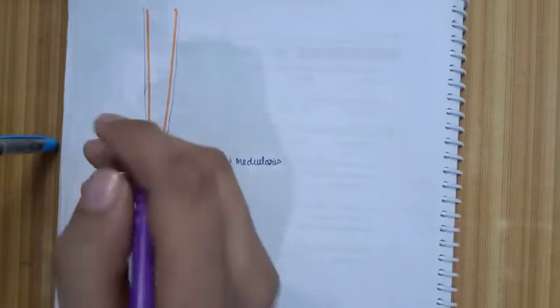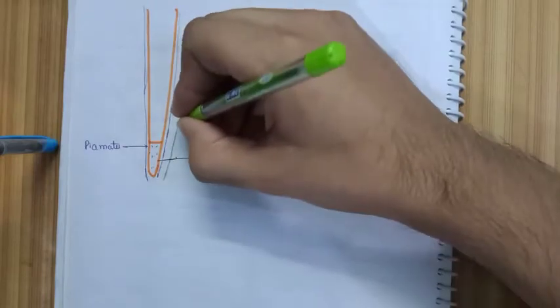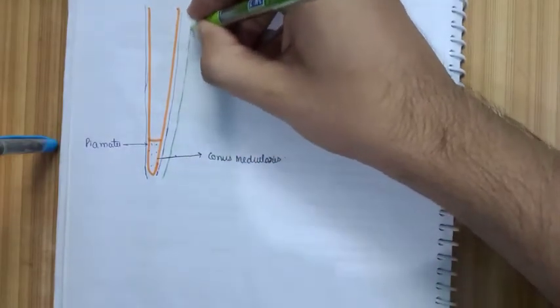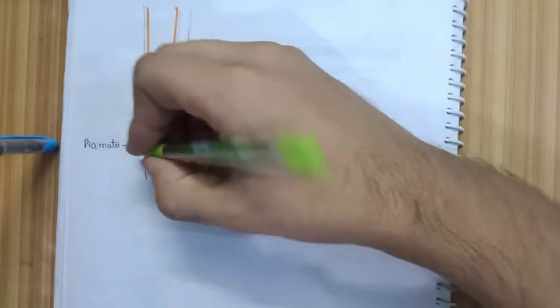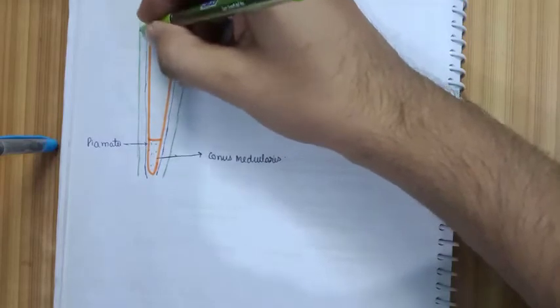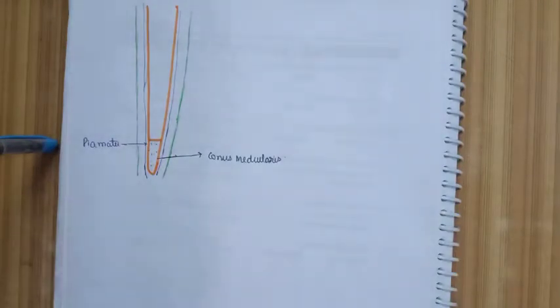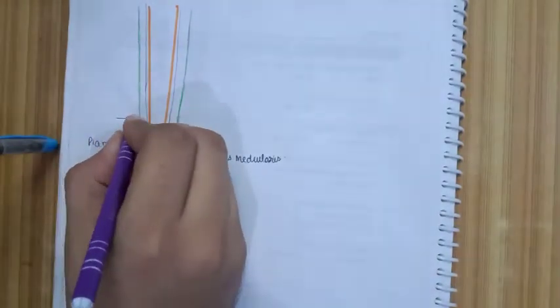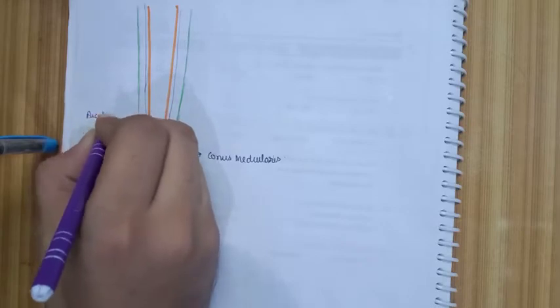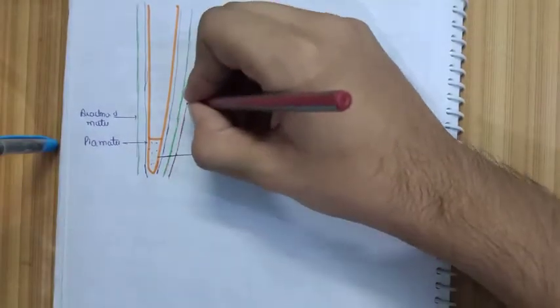The next covering is the arachnoid mater. These coverings are not widely apart — they are closely attached to each other, though the diagram separates them for clarity. The green clustered structure shown is the arachnoid mater.